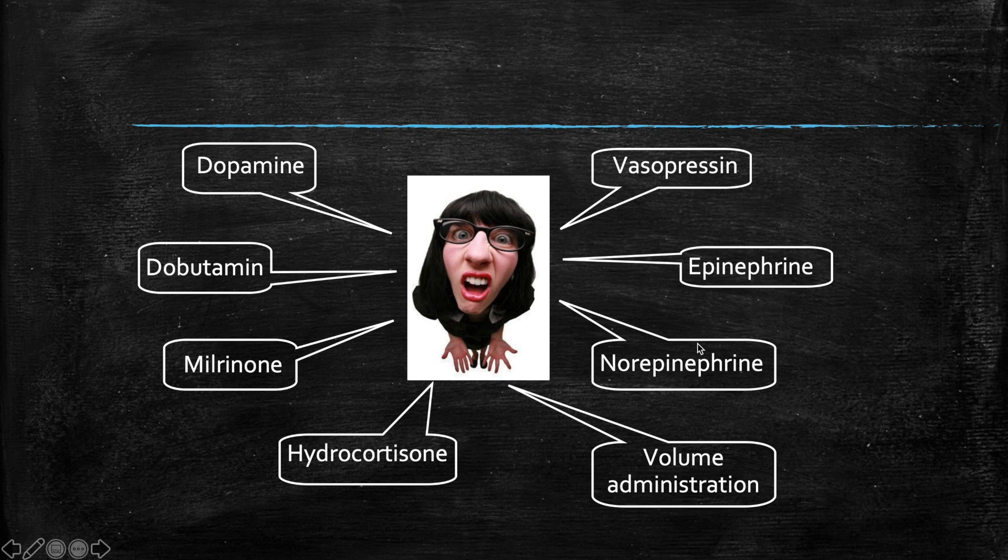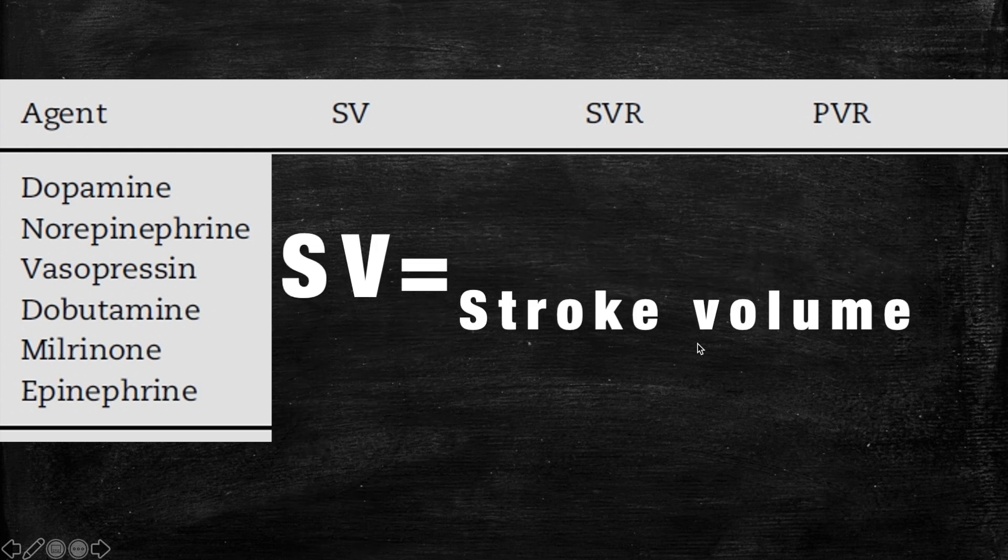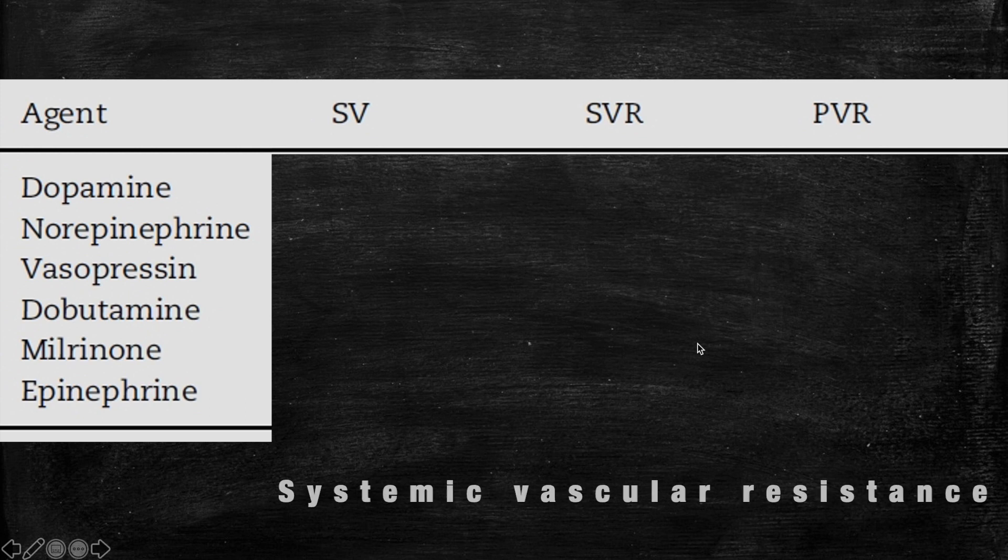We're not talking about the mechanism of actions of these agents, but actually we're talking about the physiological effects and how would they help you managing based on the physiological rationale you're thinking. These are the different agents. Each one of these medications would affect the SV, which is the stroke volume, the SVR, which is the systemic vascular resistance, and the PVR, the pulmonary vascular resistance.